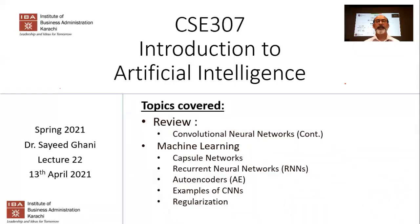Let's begin by reviewing the previous lecture where we were continuing with convolutional neural networks. Today we'll talk about capsule networks, which we started in the last lecture, then move on to issues such as what happens when time is involved, and for that we'll talk about recurrent neural networks. Time permitting, we'll also cover autoencoders, some examples of CNNs, and regularization.